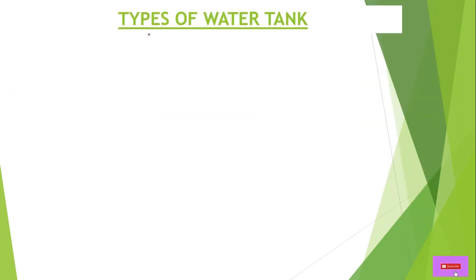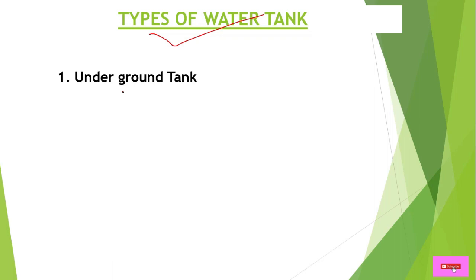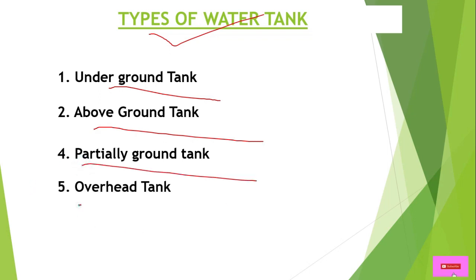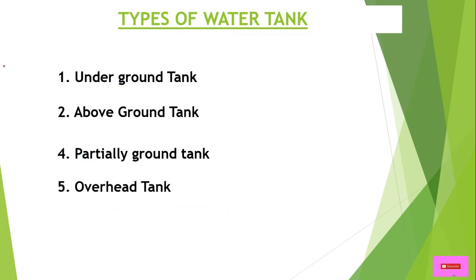Now let's move to the types of water tanks. There are four types: underground tank, above ground tank, partially ground tank, and overhead tank. These are the types of water storage tanks.